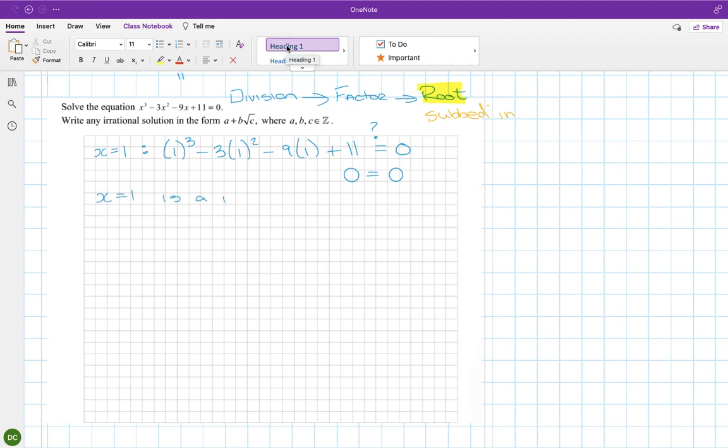And we did this, I think it was Friday. You go the other way, so you bring that back across, and it becomes a minus 1. So you get x minus 1 is a factor. Then you take that factor and you divide it in.